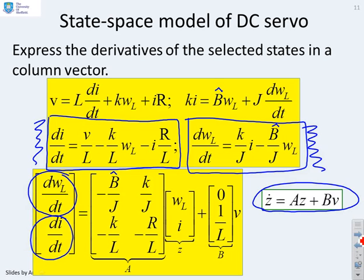And you'll see what does that give you? It gives you your standard state space form, which is z dot equals Az plus Bv. Where A is the matrix given down here. V is the vector of my states. And B is the matrix given here.